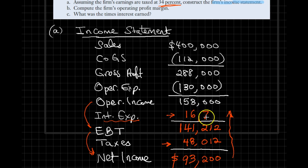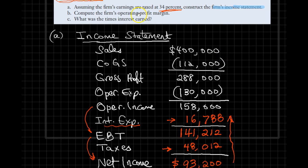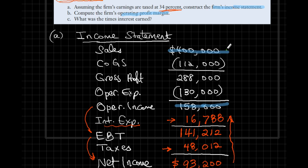And there we have it — we are done with the first part of our problem and have produced our complete income statement. The second part of the question asks for operating profit margin, which is operating income divided by total sales: $158,000 divided by $400,000 gives us 39.5%.